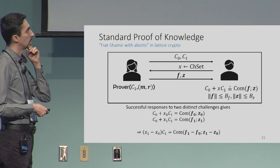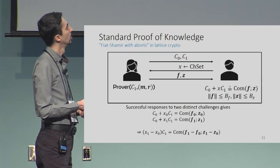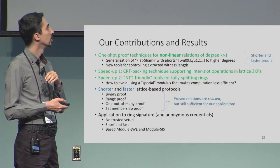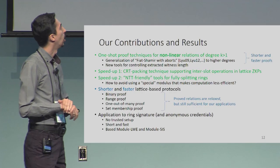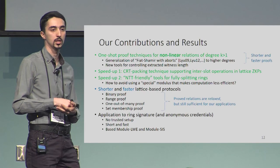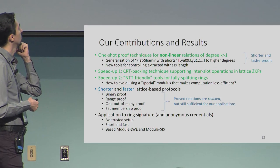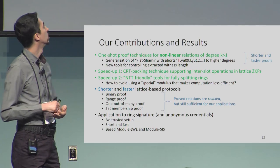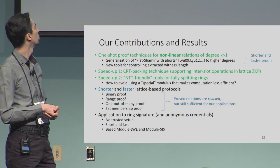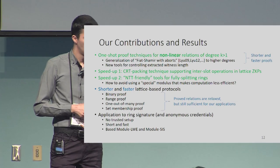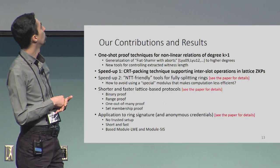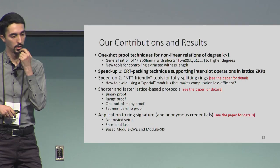Going back to this picture, the verifier's relation is linear in X — just degree one. Our contributions address more complex relations. First: one-shot proof techniques for nonlinear relations of degree K greater than one, generalizing Fiat-Shamir with aborts. Second: two speedup techniques — a CRT packing technique supporting inter-slot operations, and entity-friendly tools for fast computation. We also have applications to binary proofs, one-out-of-many proofs, range proofs, ring signatures, and a preliminary application to anonymous credentials.